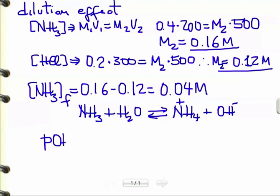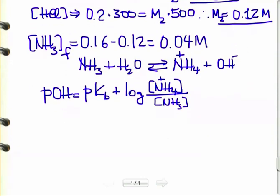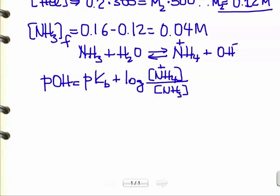Then you can use the Henderson-Hasselbalch formula. In this case, POH is similar to the pH formula. POH equals pKb plus the log of the conjugate acid, that's NH4, divided by the concentration of the base. It's analogous to the pH formula in the Henderson-Hasselbalch equation for buffer problems. We need the concentration of ammonium, ammonia, and the pKb.